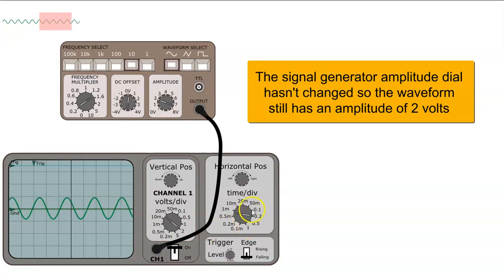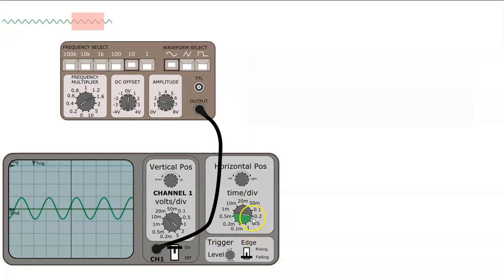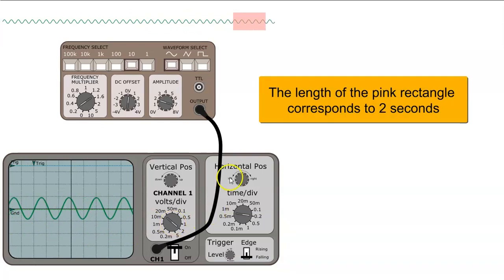We can change the time resolution by changing this dial and we can see that it's set to 0.2 seconds. So we have 10 boxes at 0.2 seconds per box which means we're seeing 2 seconds of a waveform on the scope's display.